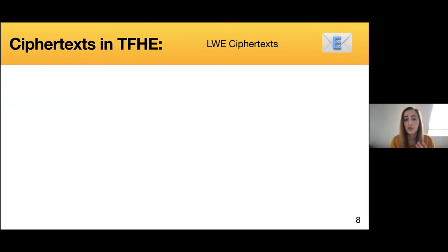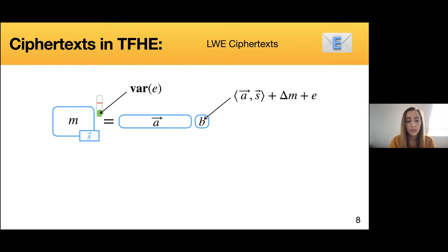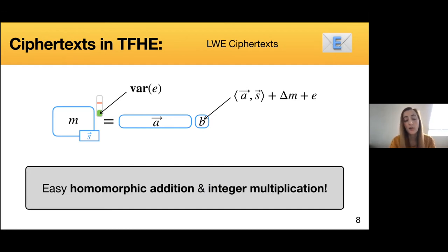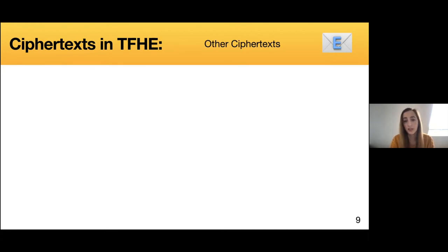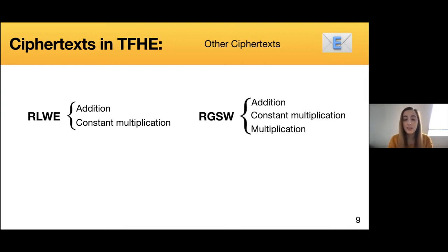Before understanding how the bootstrapping works, let's check what are the ciphertexts used in TFHE. An LWE ciphertext is a tuple (A, B), where A is a uniformly random vector and B equals the inner product between A and the secret key, plus the message scaled by a certain delta, plus the error. The error is generally a Gaussian error sampled with a certain variance. LWE ciphertexts are homomorphic with respect to addition and integer multiplication. In TFHE we also use ring LWE ciphertexts, homomorphic with respect to addition and constant multiplication, and ring GGSW ciphertexts, homomorphic with respect to addition, constant multiplication, and multiplication as well.